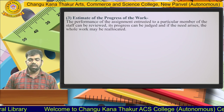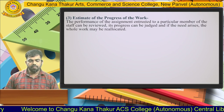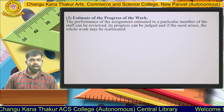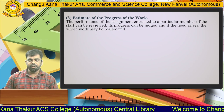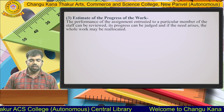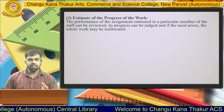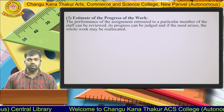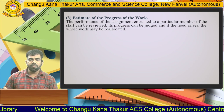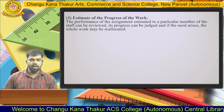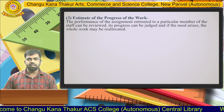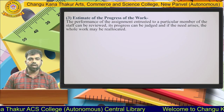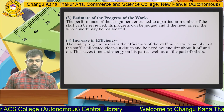The third advantage is an estimator of the progress of work. The performance of an assignment entrusted to a particular staff member can be reviewed, its progress judged, and if needed, the work may be reallocated. If an auditor finds that a person is not able to perform the duty properly, the work can be allocated to another person.